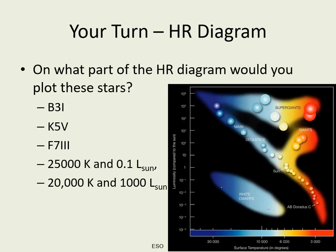Let's see if you can plot some stars. Draw an HR diagram and show where you would place the following stars. Would they be main-sequence, giants, supergiants, or white dwarfs? Notice that some are listed by spectral luminosity class and others are listed by temperature and luminosity — you should be able to plot them with either set of information.